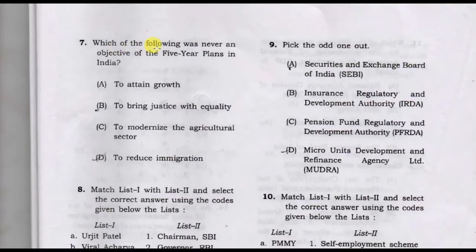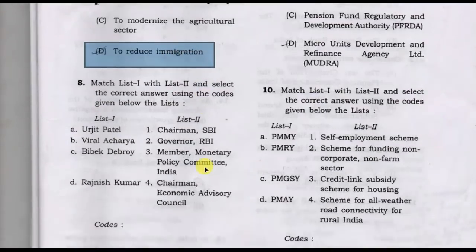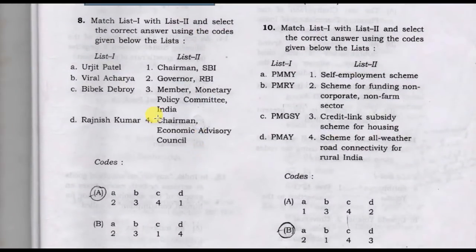Which of the following was never an objective of the five-year plans in India? Option D, to reduce immigration, is the correct answer.